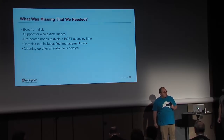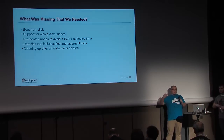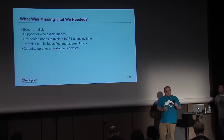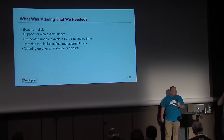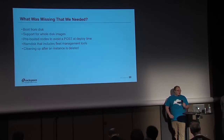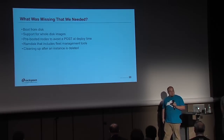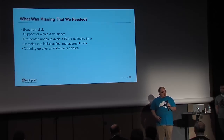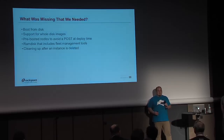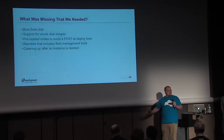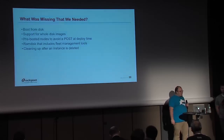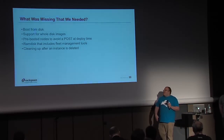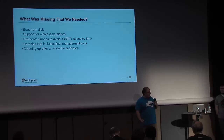What was missing? We needed boot from disk — the existing driver was predicated on PXE booting the instance every time, which is actually an HA problem: if you have a control plane outage, that instance might not be able to come back up if rebooted. We wanted to support whole disk images, and we wanted to be able to pre-boot nodes to avoid POST at deploy time — saving three or four minutes of provisioning time on every server. We also wanted a more complete RAM disk including fleet management tooling, and finally, cleaning up after an instance is deleted — Ironic didn't do this.